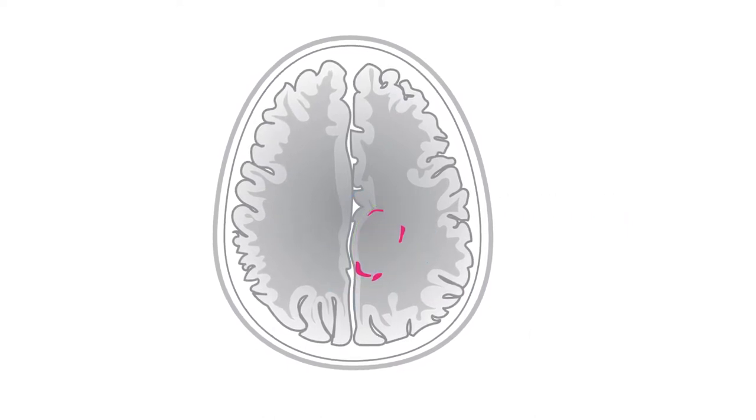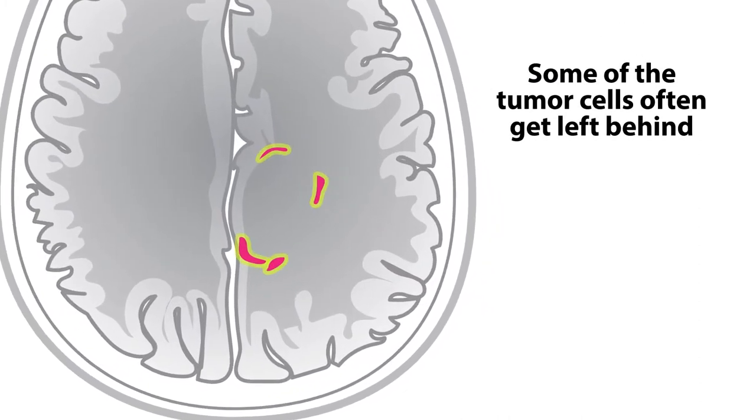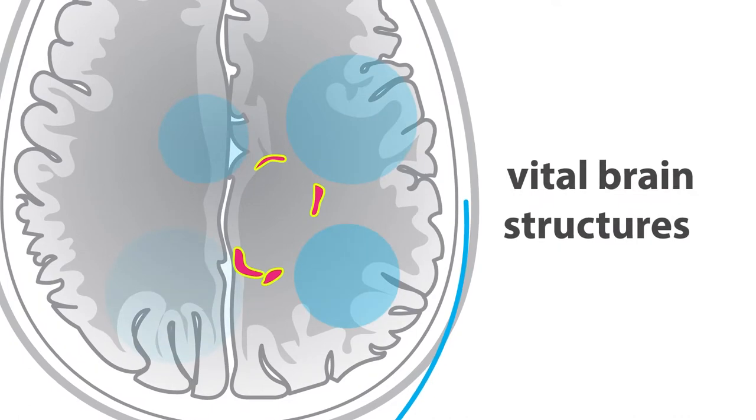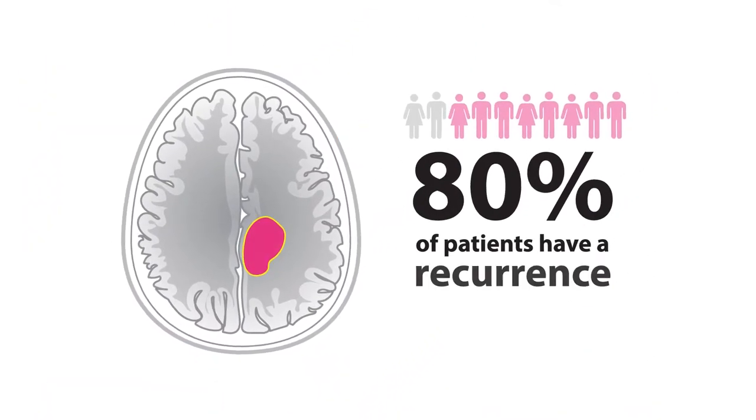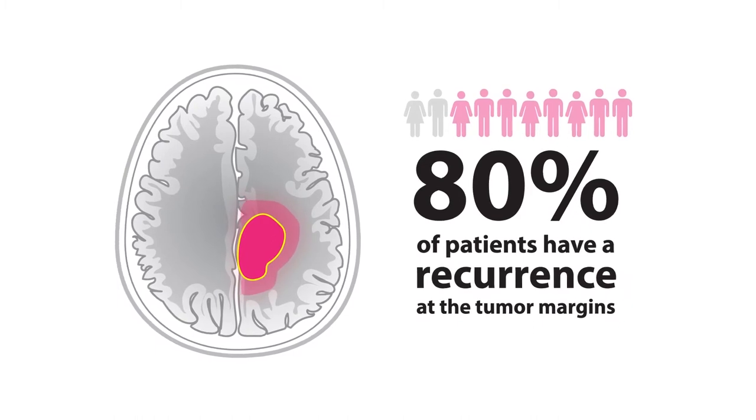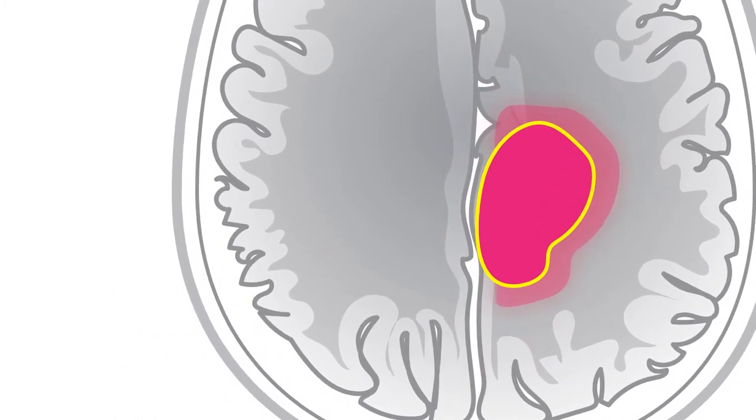Unfortunately, using this method, some of the tumor cells often get left behind in an effort to avoid damaging nearby vital structures in the brain. For over 80% of patients with diffuse astrocytomas who have this surgery, their cancer recurs, right near the tumor margins.